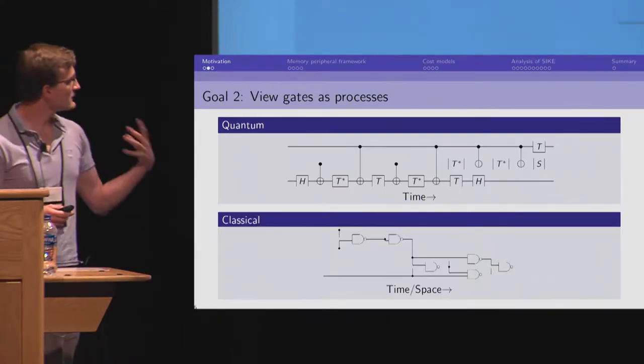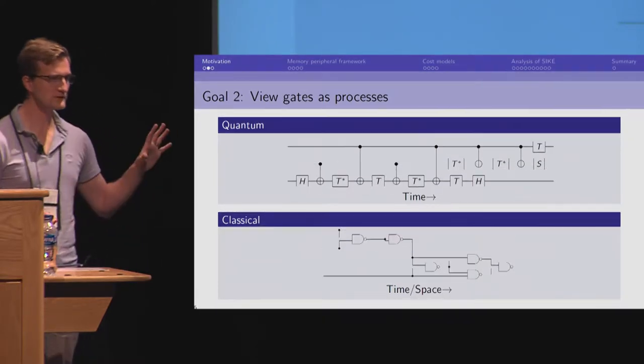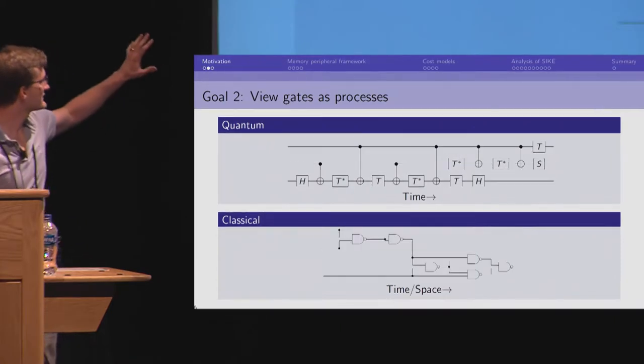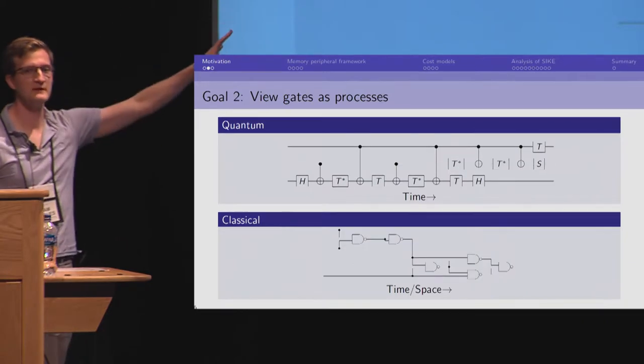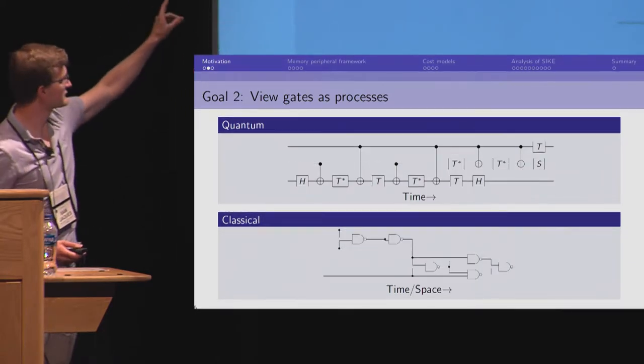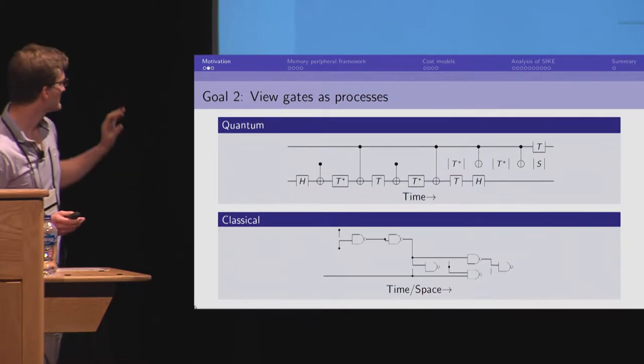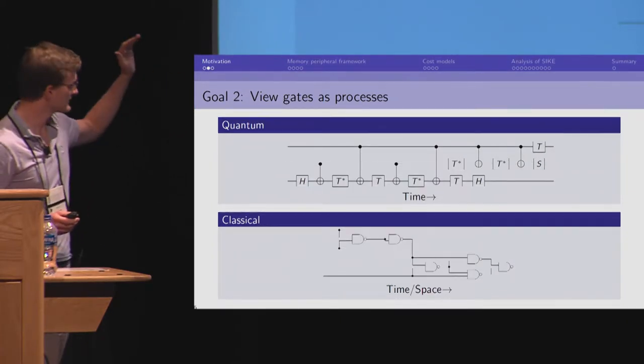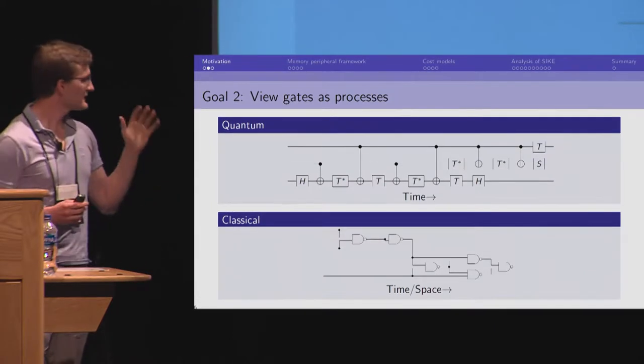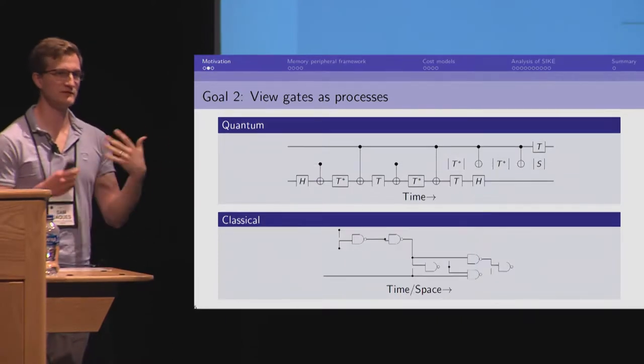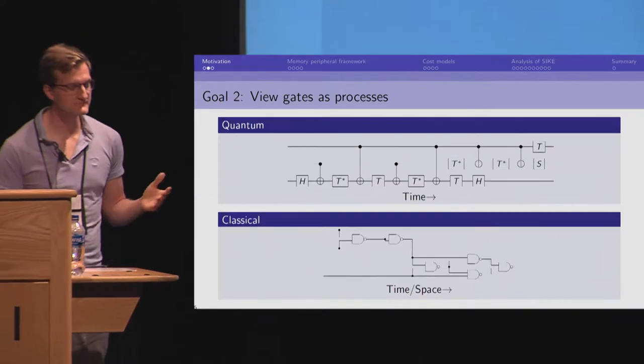And another thing we want to incorporate into this is a view that gates are processes. So, in a quantum circuit diagram, you have different wires and they represent qubits. And time goes from left to right. When you look at this, what's happening is each of these symbols represents a gate that is applied to that qubit at that time. These deliberately resemble classical circuit diagrams where each wire is a bit and time goes from left to right. The thing about the classical diagram is the diagram represents this formal Boolean circuit model that doesn't account for space at all.